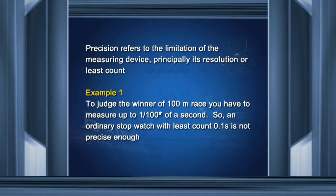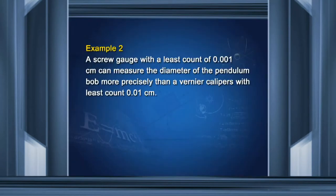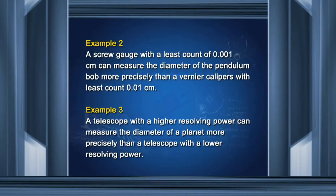For example, to judge the winner of a 100-meter race, you have to measure time to the accuracy of 1/100th of a second, so an ordinary stopwatch with least count 0.1 second is not precise enough. A screw gauge with a least count of 0.001 centimeter can measure the diameter of a pendulum bob more precisely than a vernier caliper with least count 0.01 centimeter. A telescope with a higher resolving power can measure the diameter of a planet more precisely than a telescope with a lower resolving power.